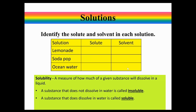There is a measure of how much a substance will dissolve in a liquid — we call that solubility. If a substance does not dissolve in water, we call it insoluble in water. If a substance does dissolve in water, it is called soluble. Salt dissolves in water, so salt is soluble in water. Bricks do not dissolve in water, so they are insoluble. Wood is also insoluble in water — wood does not dissolve in water.